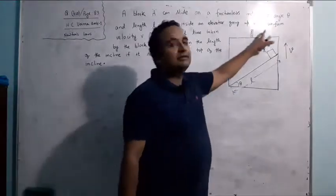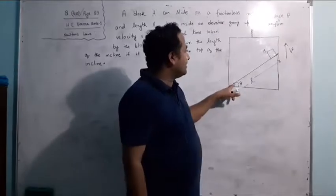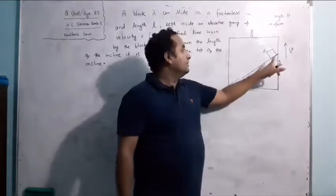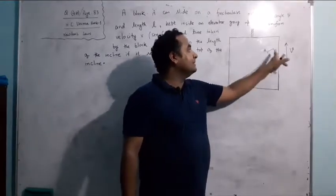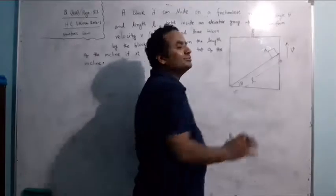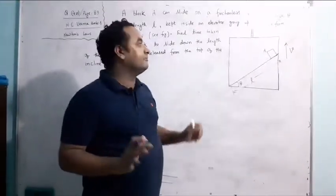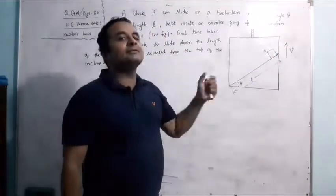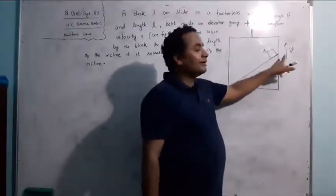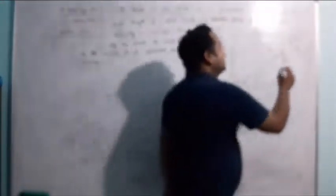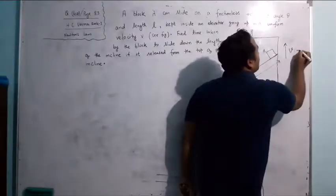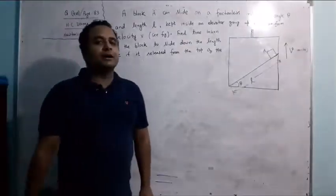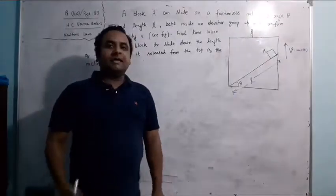The question says there is an elevator (lift) with an incline inside it of length L. A block is released from the top of the incline. The surface is smooth, no friction. We need to find how much time the block takes to reach the bottom. The elevator is moving with constant velocity V upward.